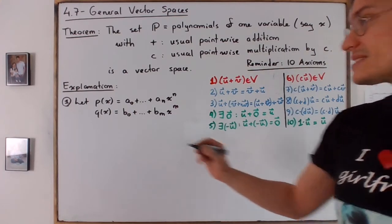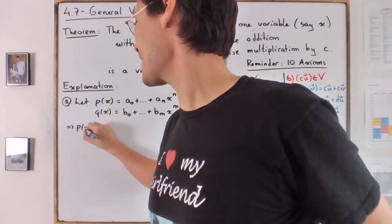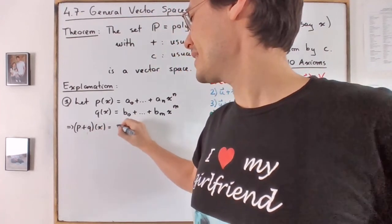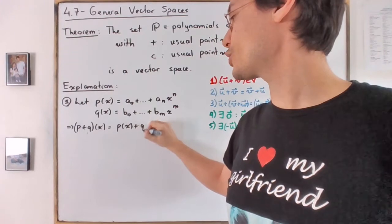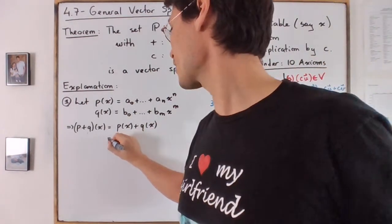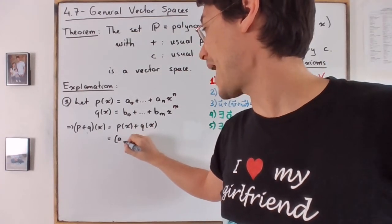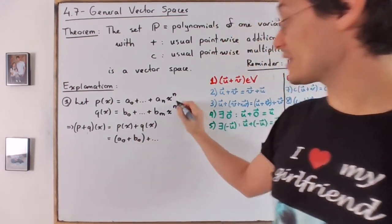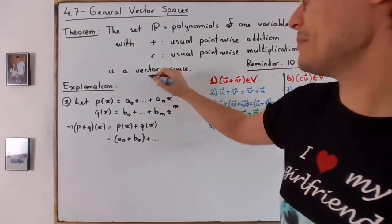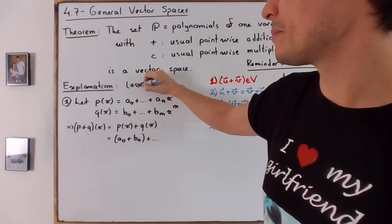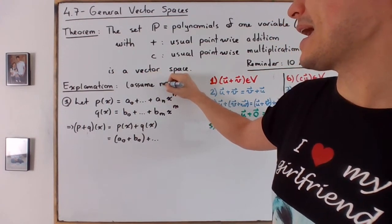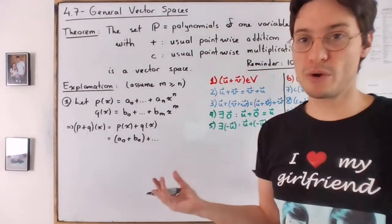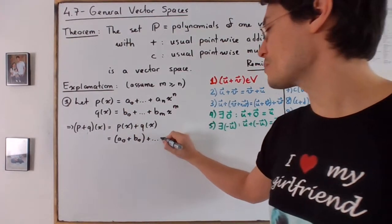Then in this case, as you can see, p plus q of x, the way it is defined, is p of x plus q of x, which is in other words, you add the zero coefficients. And without loss of generality, let's just assume that m is bigger than n. So we just assume that one is bigger than the other, and we assume that is the q of x. This is just to make the argument cleaner.